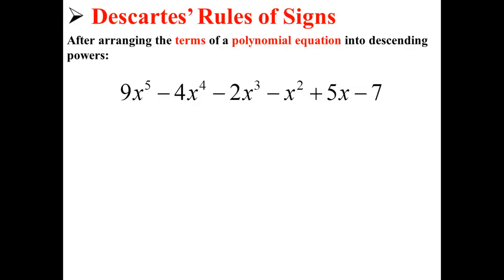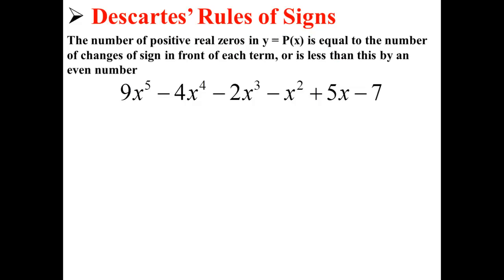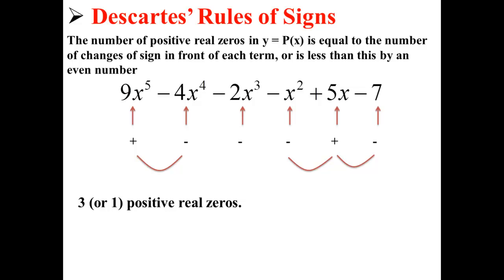That all sounds very complicated, so let's actually try an example. Here we have our polynomial equation arranged in descending order of powers. First, we'll check the first part. The number of positive real zeros is equal to the number of changes of sign in front of each term, or is less than this by an even number. Here we have our signs for our six terms — it goes from positive to negative to negative to negative to positive to negative. So we have three changes: from positive to negative, from negative to positive, and then back from positive to negative. So we either have three positive real zeros or one positive real zero, because one is less than three by an even number — in this case two. So three or one positive real zeros.